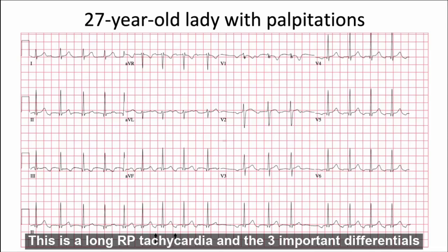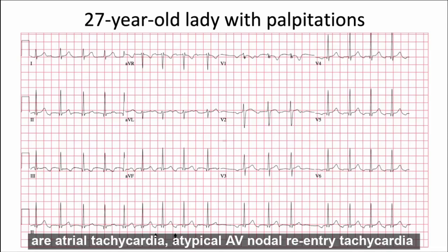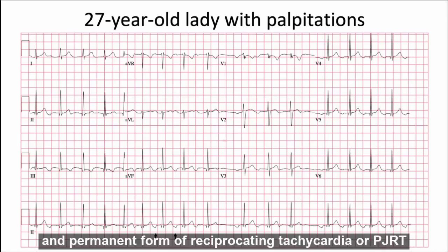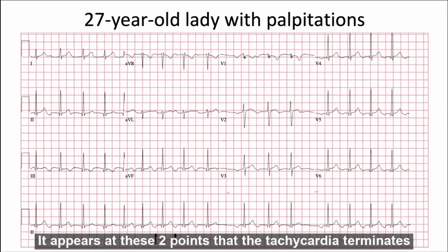This is a long RP tachycardia and the three important differentials are atrial tachycardia, atypical AV nodal re-entry tachycardia, and permanent form of reciprocating tachycardia, or PJRT.